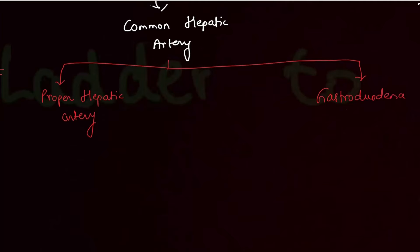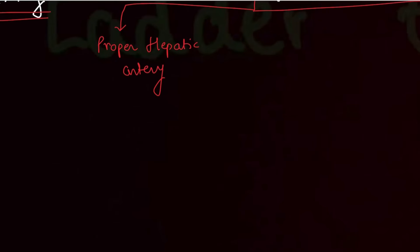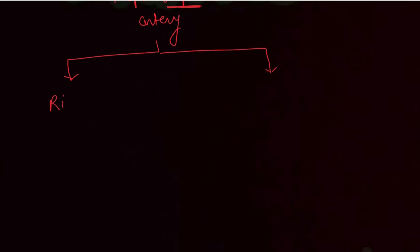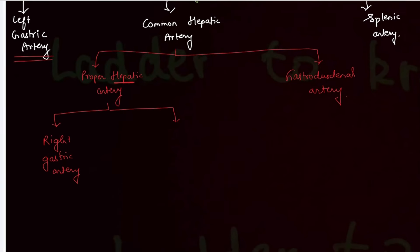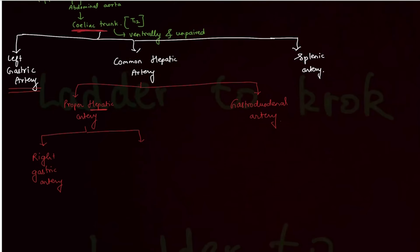From the name itself, if you split the words you understand the location. Proper hepatic artery — hepat means liver — so it supplies the liver. But the proper hepatic artery gives off two branches. The first is the right gastric artery, which goes to the stomach. Remember that the left gastric artery originates directly from the celiac trunk, whereas the right gastric artery is a branch of the proper hepatic artery.